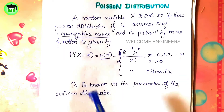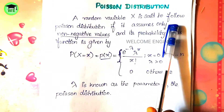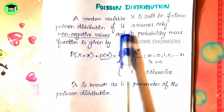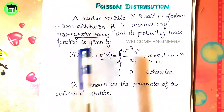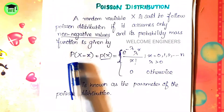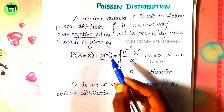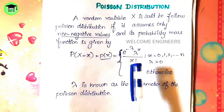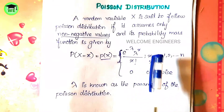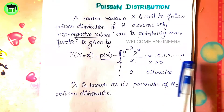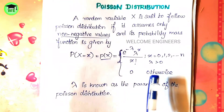Let us start. This is the definition for the Poisson distribution: a random variable X is said to follow Poisson distribution if it assumes only non-negative values. Its probability mass function is given by P(X = x) = e^(-λ) · λ^x / x!, where x takes values 0, 1, 2, ... up to n, and λ is greater than 0, otherwise 0.